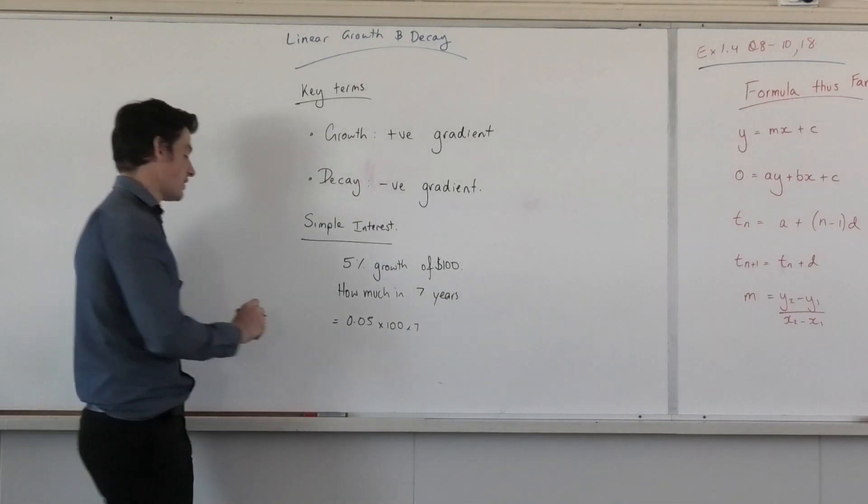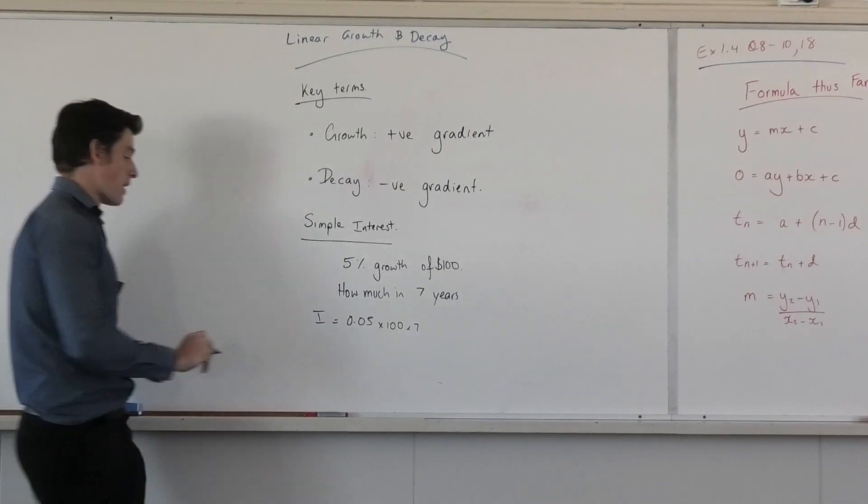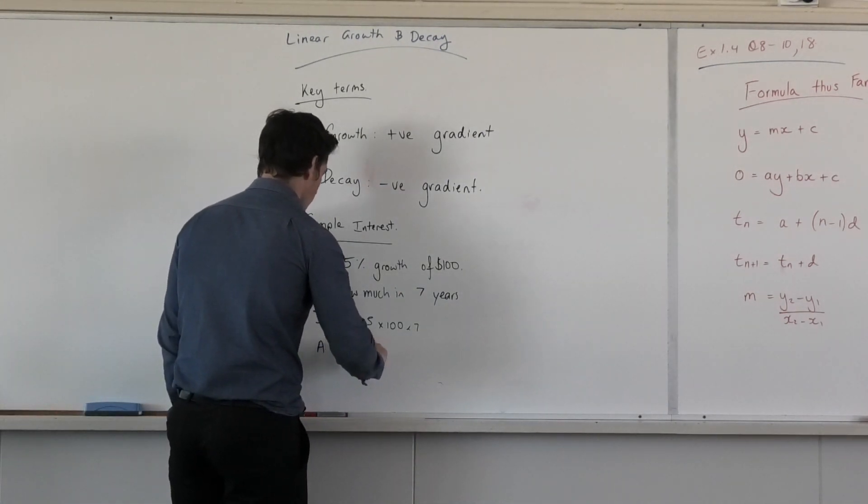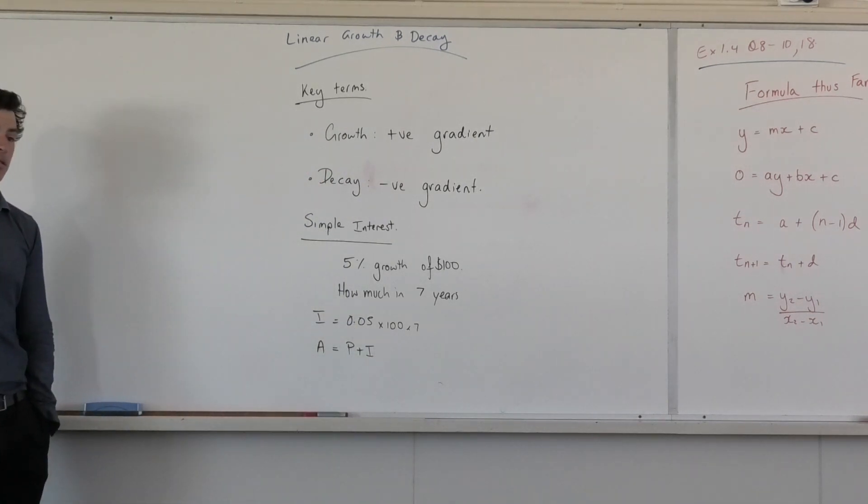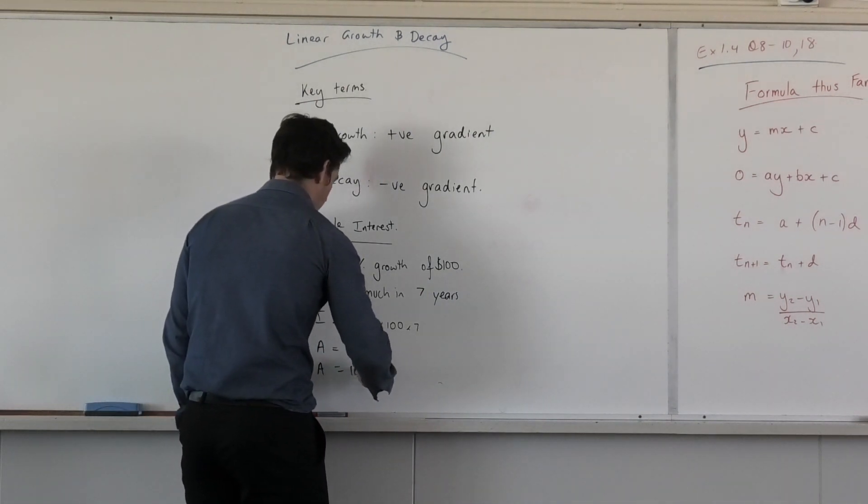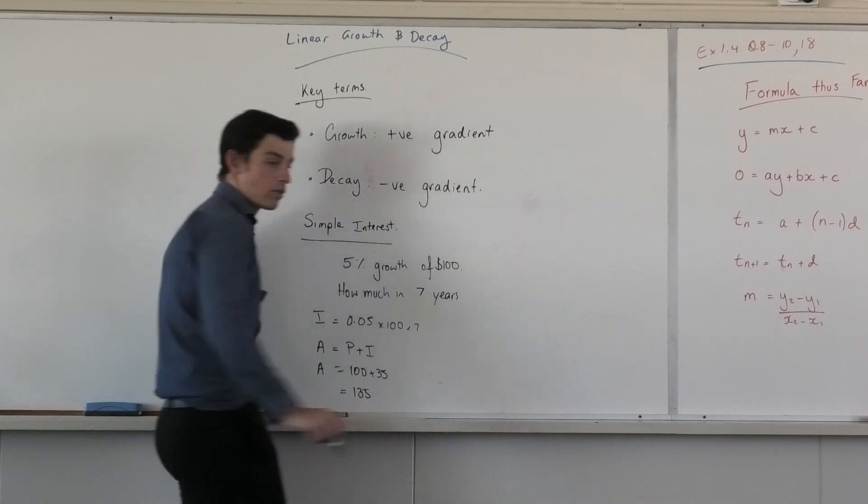His amount, his final amount is equal to his principal plus his interest. What was his principal amount or his initial amount? 100. So his final amount is equal to 100 plus 35, which is 135. Very good.